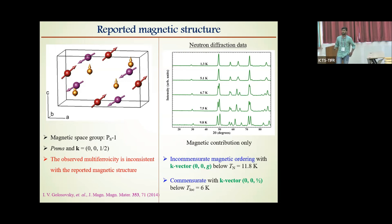Reanalysis of neutron diffraction data confirmed that this compound exhibits incommensurate magnetic ordering at 11.8 Kelvin with the modulation vector (0,0,q). And further, it exhibits commensurate magnetic ordering with K vector (0,0,½) at lock-in transition 6 Kelvin.